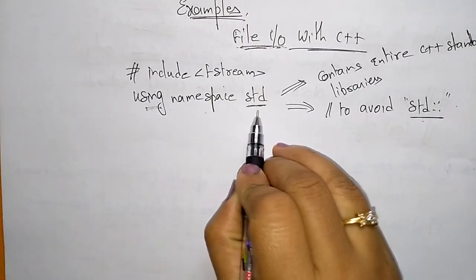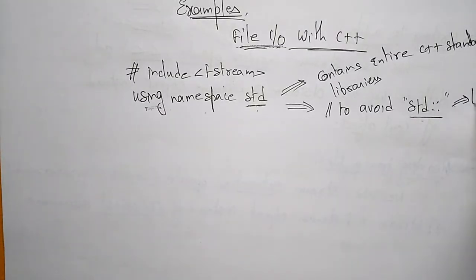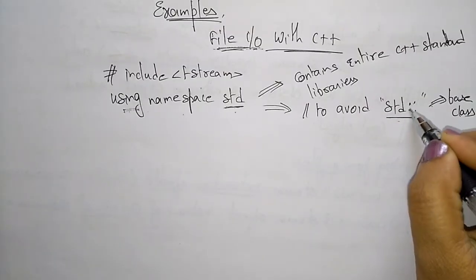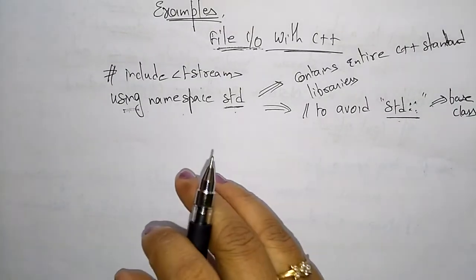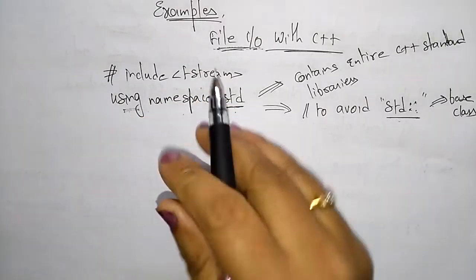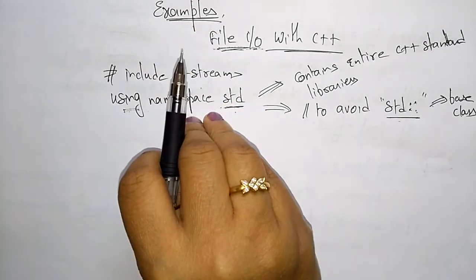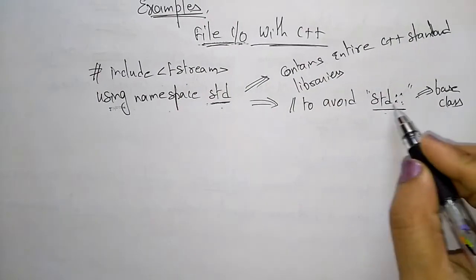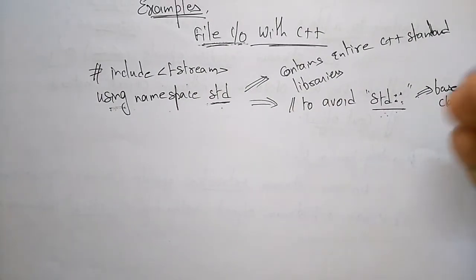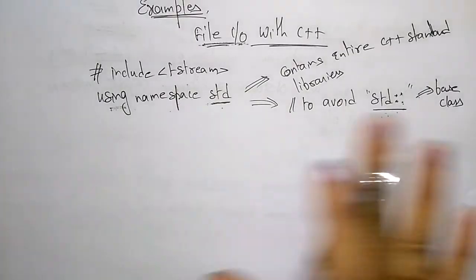std is like a base class. We are inheriting the data that is present in the namespace std. To avoid writing std scope resolution operator every time we use data, we just declare 'using namespace std' before the program.